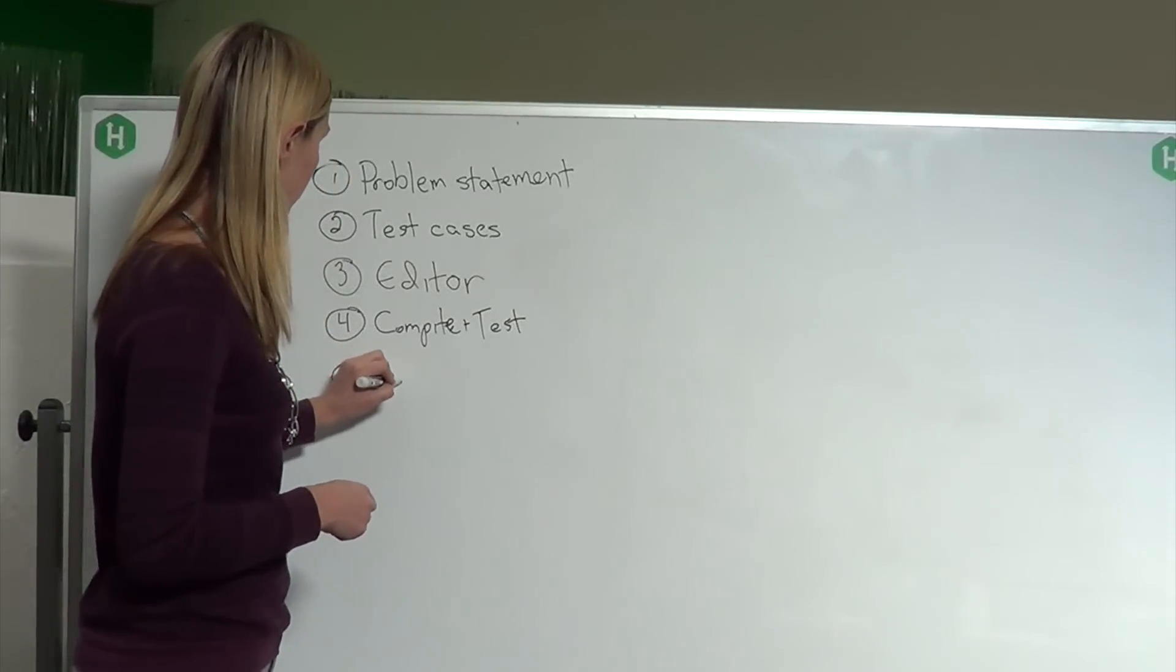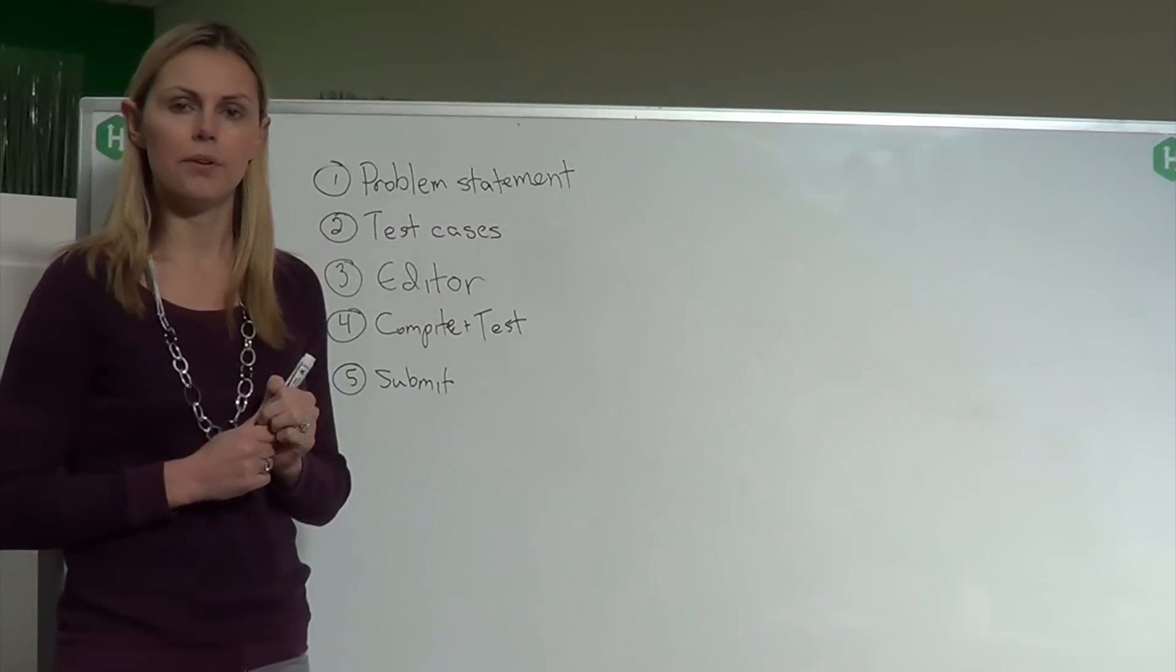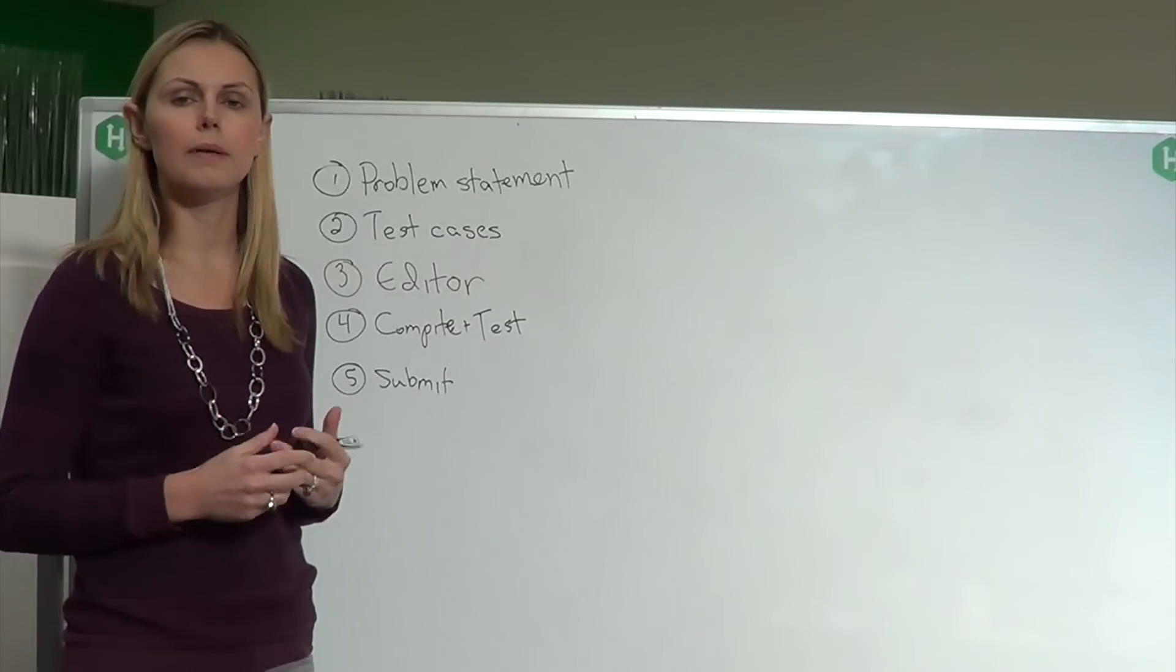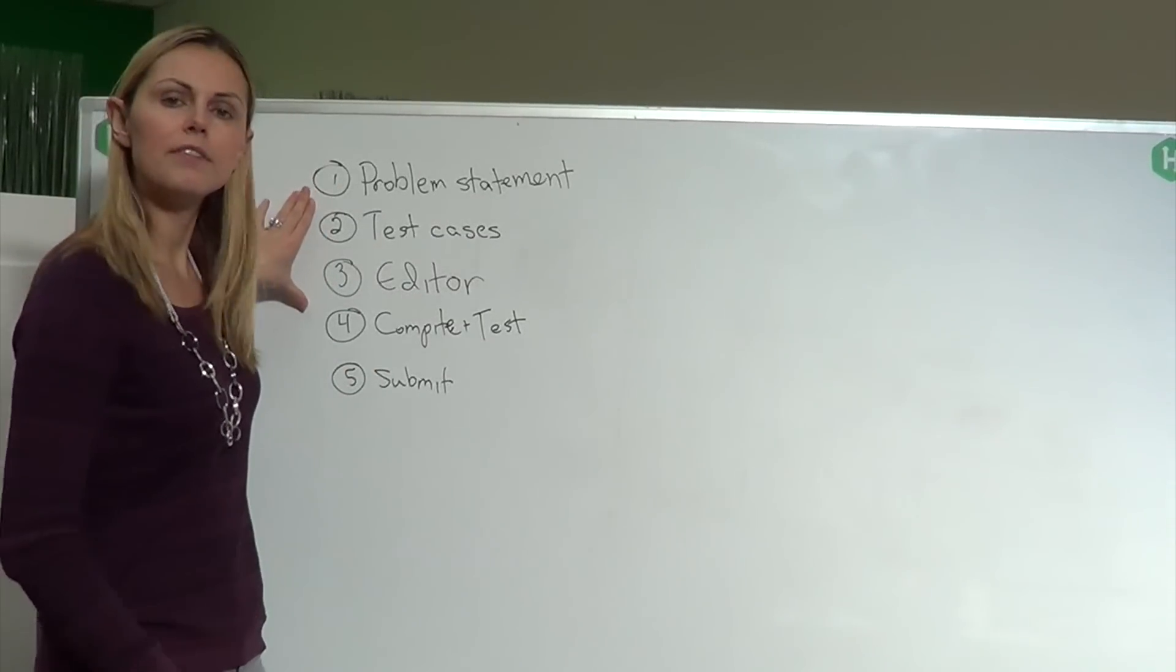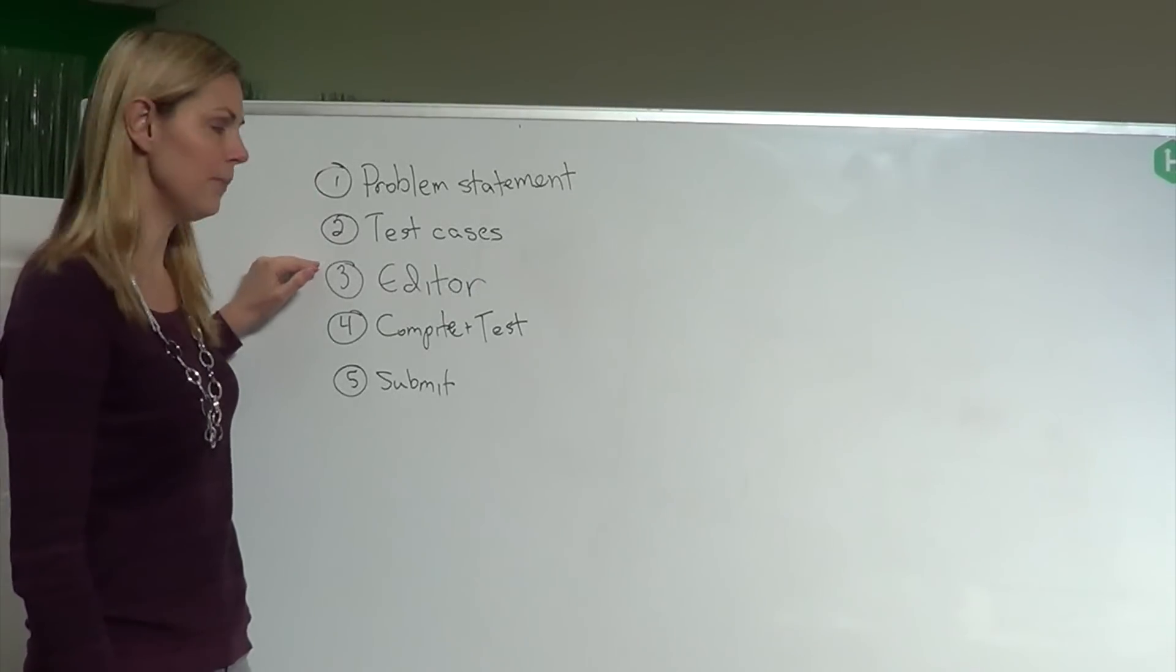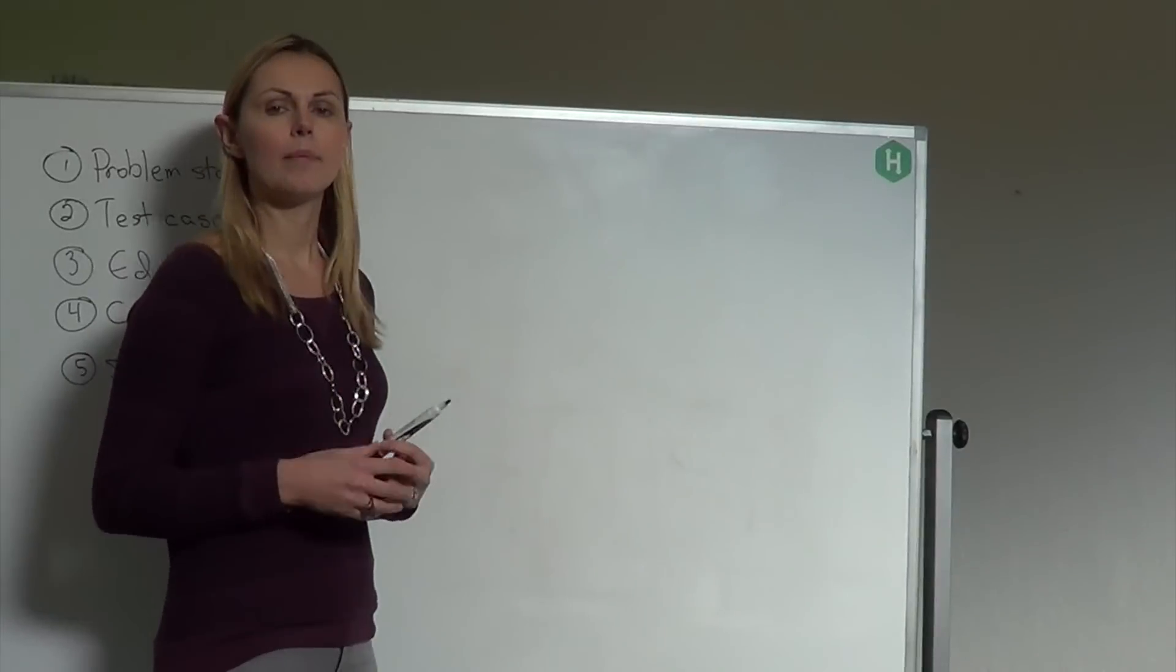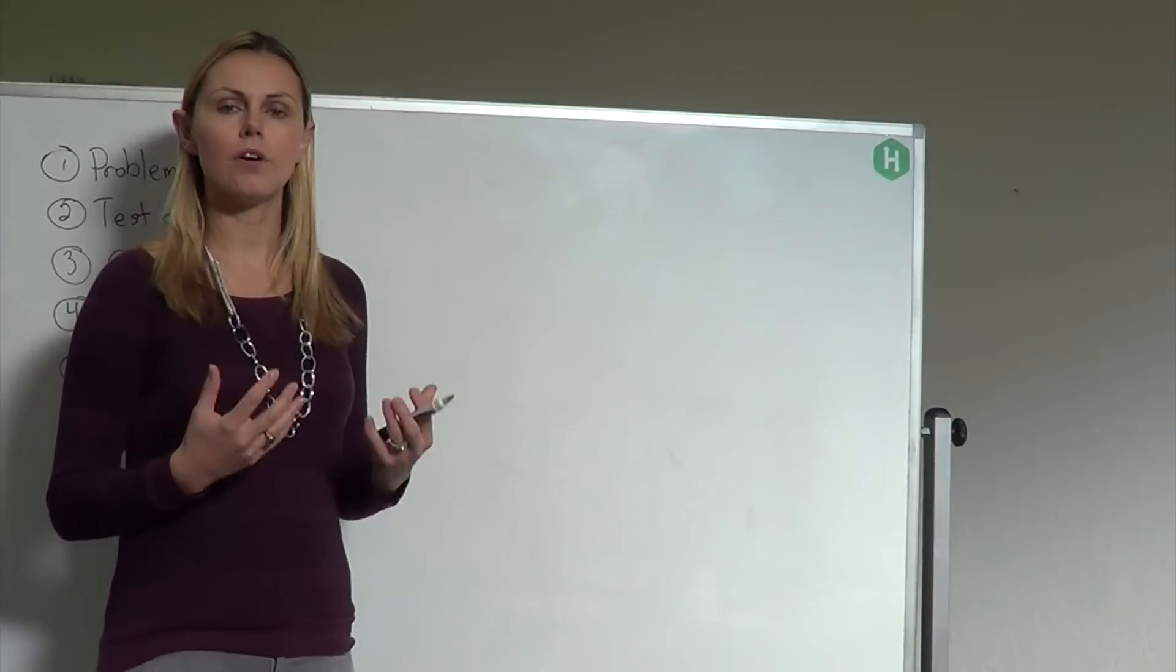Fifth, once you think you have it all perfect, go and submit your code. And if you want, you can go back and submit it again. So those are the five steps of the HackerRank platform: the problem statement, test cases, the editor, compile and test, and submit. And now we're going to talk about the two different ways that the problem could be stated.